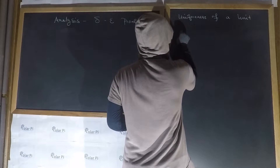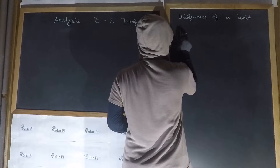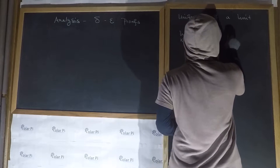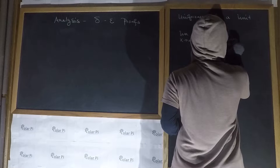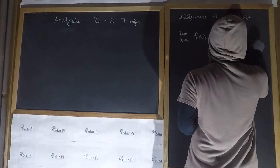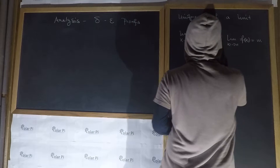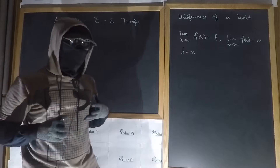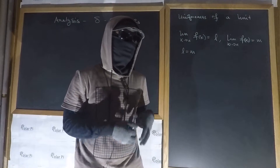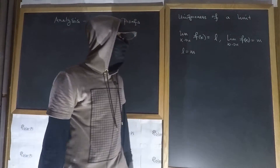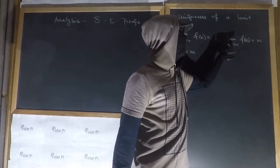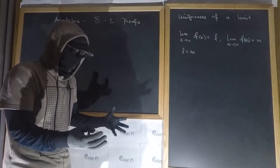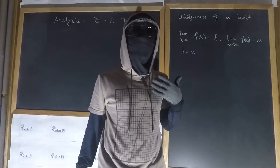What I mean is that if the limit as x goes to a of f(x) is equal to L, and the limit as x goes to a of the same function f(x) is equal to M, then L must be equal to M. This is what I mean by the uniqueness of a limit. So when a limit exists, it's unique — it's a specific number and only one number, either L or M, because x is going to a in both cases and it's the same function. And therefore, we require uniqueness. So how do we prove this?